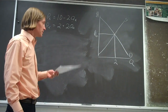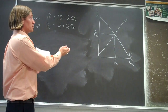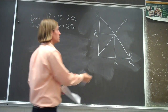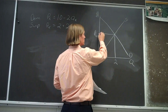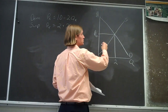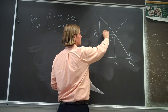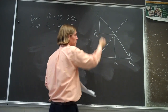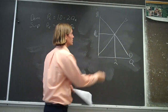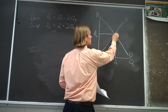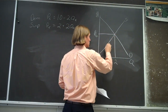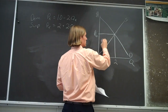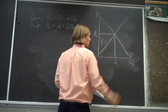If we look for the producer surplus on this graph at equilibrium, the producer surplus is the area below the price and above the supply curve. So it would be represented by this triangle — that's our producer surplus.